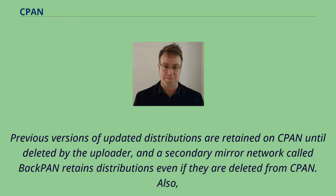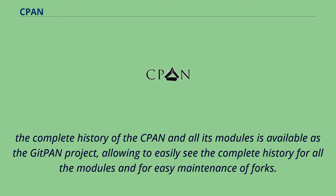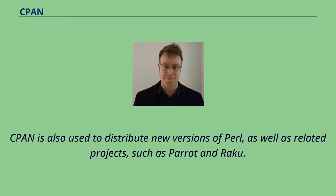Also, the complete history of the CPAN and all its modules is available as the GitPAN project, allowing users to easily see the complete history for all the modules and for easy maintenance of forks. CPAN is also used to distribute new versions of Perl, as well as related projects such as Parrot and Raku.